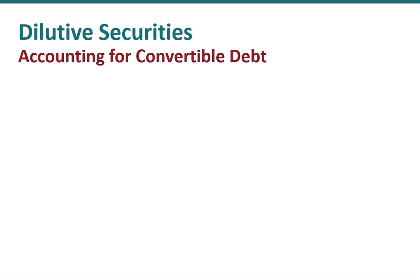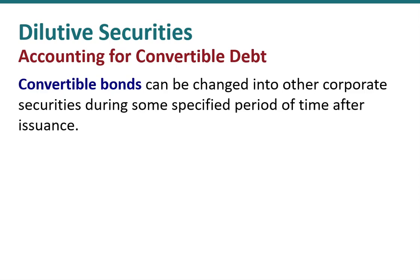In this video, we're going to discuss the accounting for convertible debt, a potentially dilutive security. Convertible bonds can be changed into another corporate security, typically common stock, during some specified period of time after the convertible debt was issued.